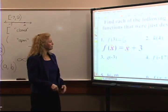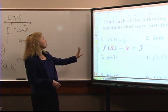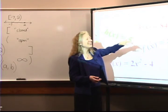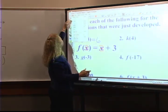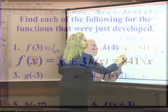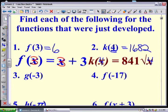For number two, I want to find k(4). I need to go find my k function — that was the one with the square root. I copy that and set it up. Whatever I plug into the k function, I take the square root of it and then multiply by 841. The square root of four is two, so two times 841 is 1682. Therefore k(4) = 1682.